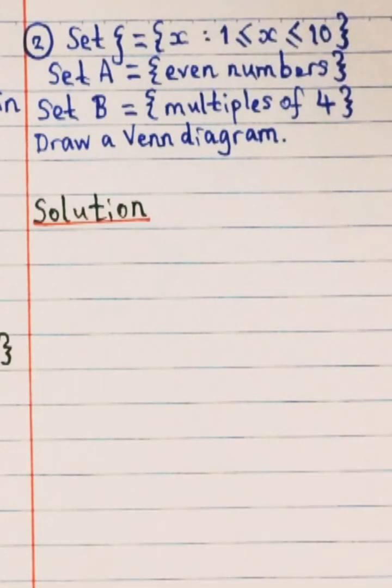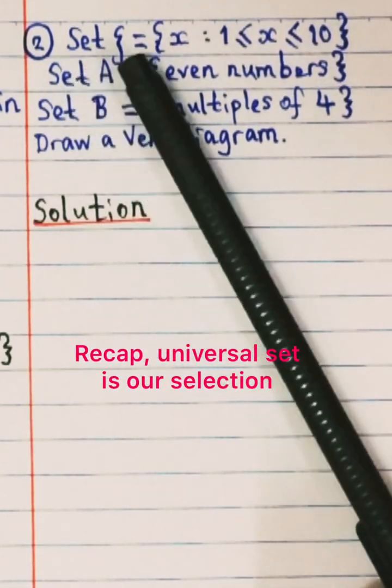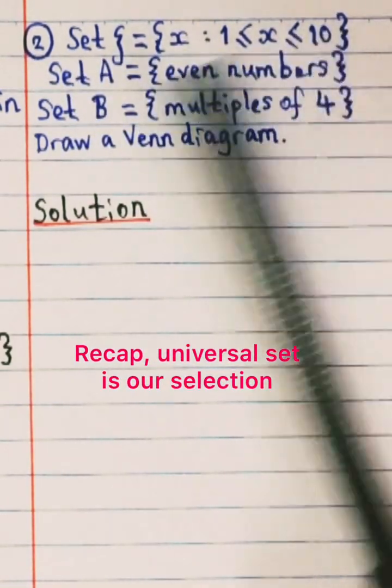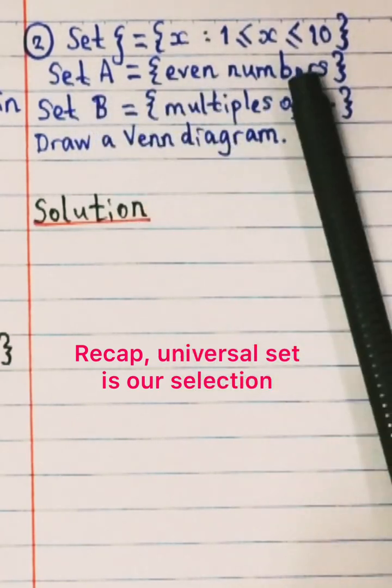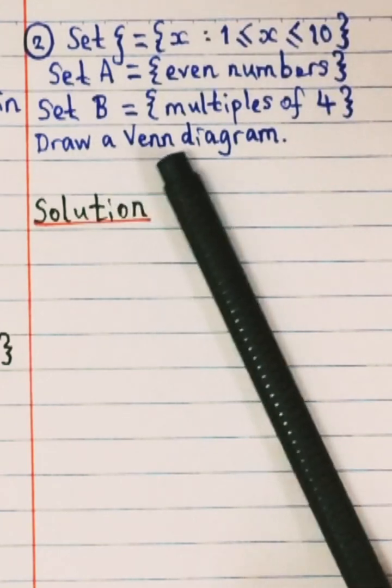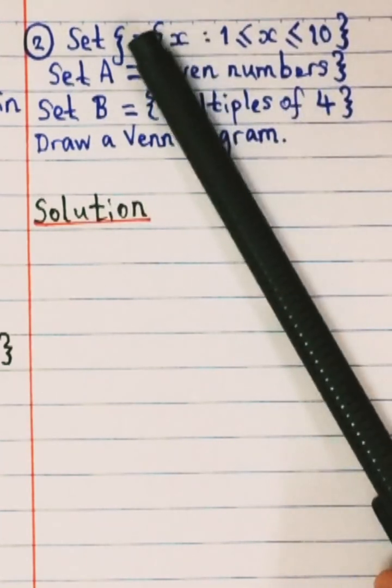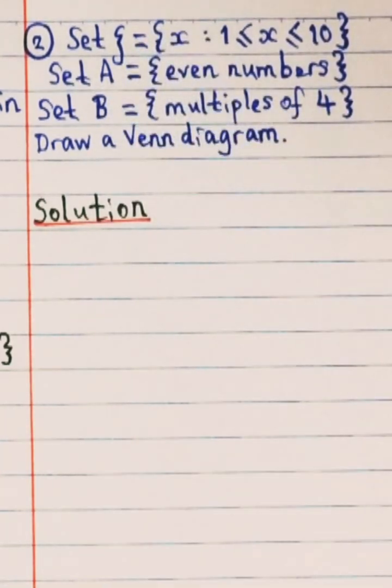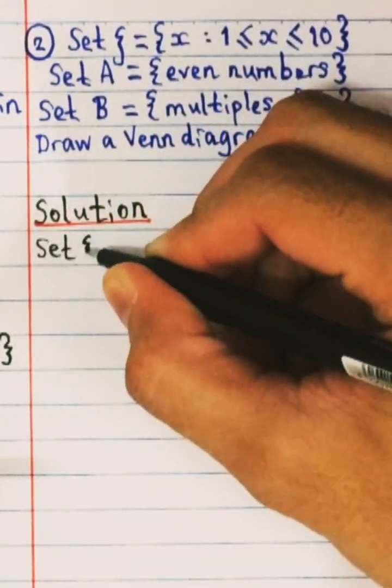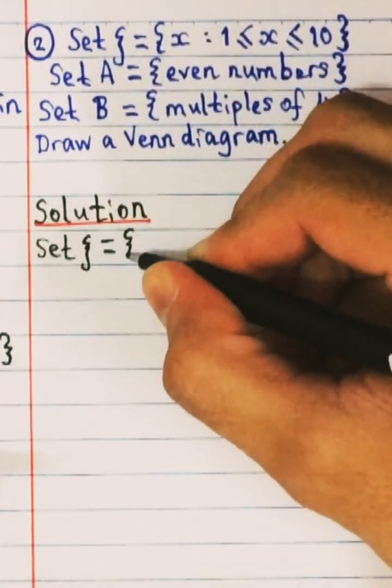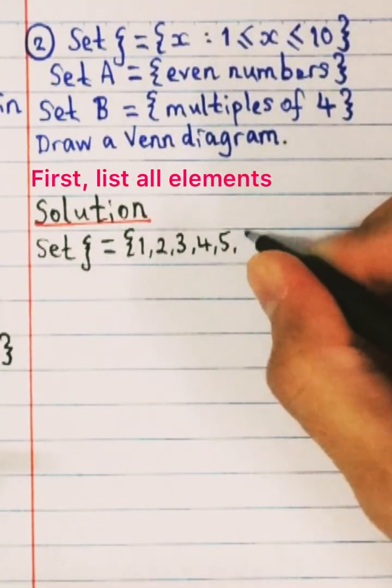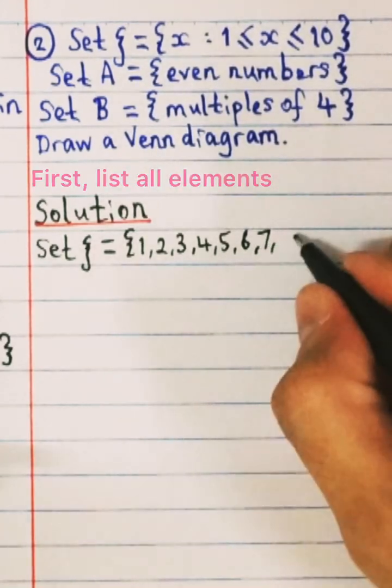Okay, example number 2. You are given set universal equals to X such that X is between 1 until 10, and your set A equals to even numbers, and then set B equals to multiples of 4. So we're gonna draw a Venn diagram to represent your universal set, set A and set B. First you're gonna list all your set. So the set universal will be from 1 until 10. So you're gonna write 1, 2, 3, 4, 5, 6, 7, 8, 9 and 10.